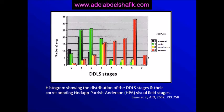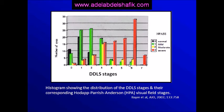However, when considering one patient at a time — which is what we are doing in practice — you can notice some patients where field damage is severe according to the field but the DDLS rates as mild. Conversely, some patients show marked disc changes but minimal field changes. Personally, I depend on both the field and the disc, and I choose whichever shows more damage. If the disc examination shows severe changes, I go with severe; if the field shows more damage, I choose the field, and I set my target intraocular pressure accordingly.